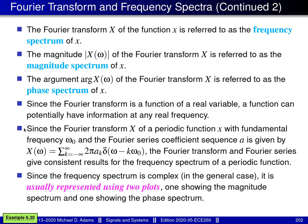Another observation concerns periodic functions. The Fourier transform big X of a periodic function little x, with fundamental frequency omega naught and Fourier series coefficient sequence a, is given by a particular formula. What we observe is that the notion of frequency spectra for both the Fourier transform and Fourier series give consistent results for periodic functions. In the context of the Fourier transform, the frequency spectrum of a periodic function can only be non-zero at integer multiples of the fundamental frequency — at frequencies of the form k omega naught. When non-zero, it equals 2 pi a_k times a delta function, whereas in the context of Fourier series it equals simply a_k, which is very similar. So the Fourier transform and Fourier series are consistent with one another in terms of frequency spectra.